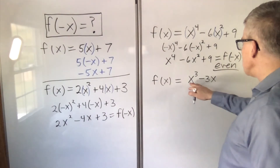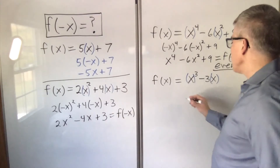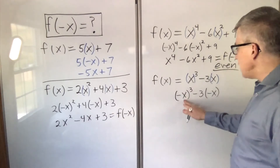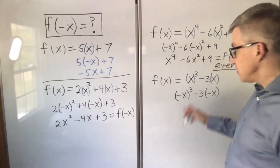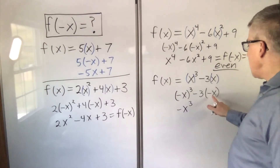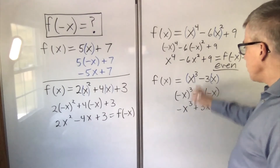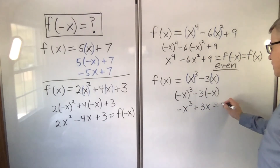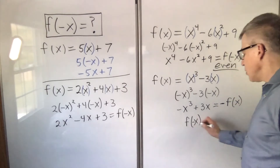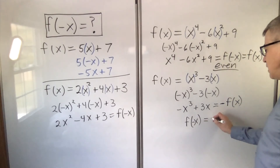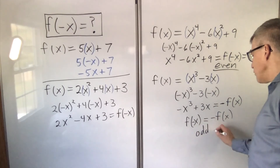Finally, f of x equals x cubed minus 3x. We put the x in parentheses and replace with negative x. Negative x cubed — that's negative x times negative x times negative x — three negatives make it a negative. And the negative and negative make a positive 3x. You'll note that is actually the negative of the original function. When f of negative x equals negative f of x, we call that an odd function.